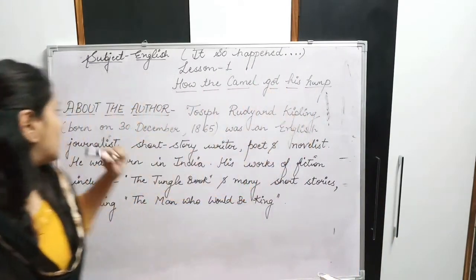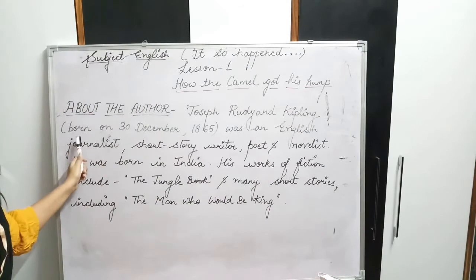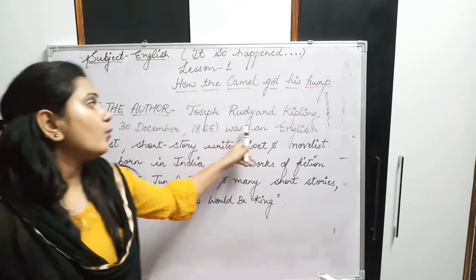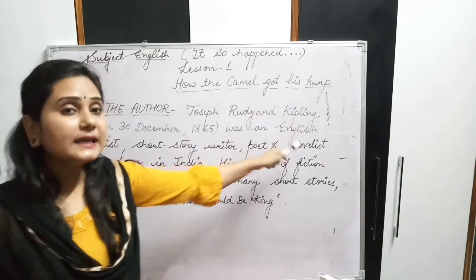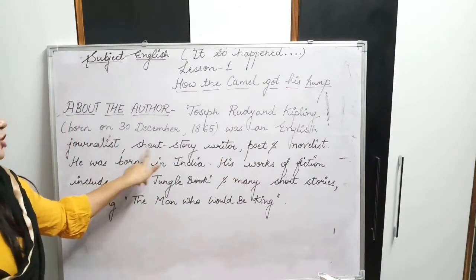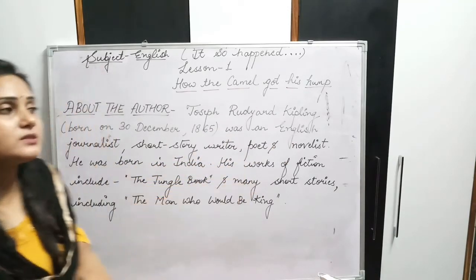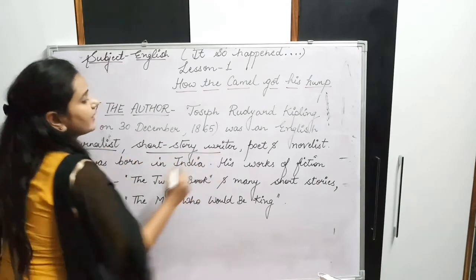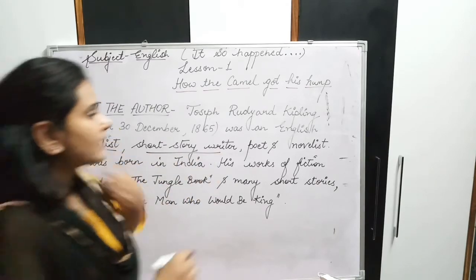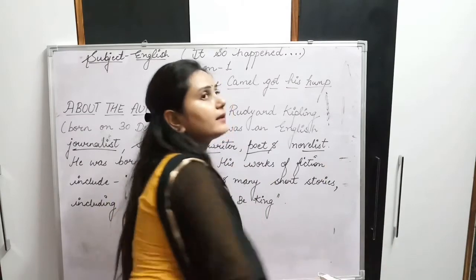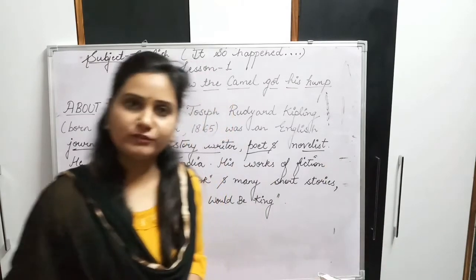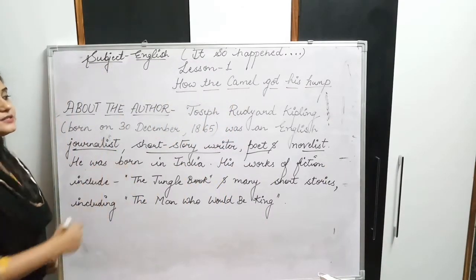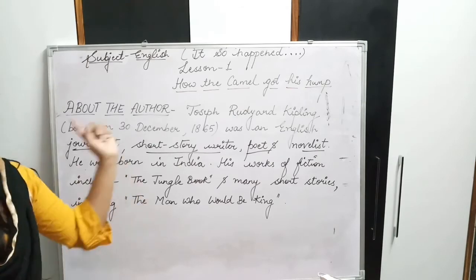Joseph Rudyard Kipling was born on 30th December 1865. He was an English journalist, short story writer, poet, and novelist. He was born in India and his works of fiction include the famous Jungle Book and many short stories, including 'The Man Who Would Be King.'